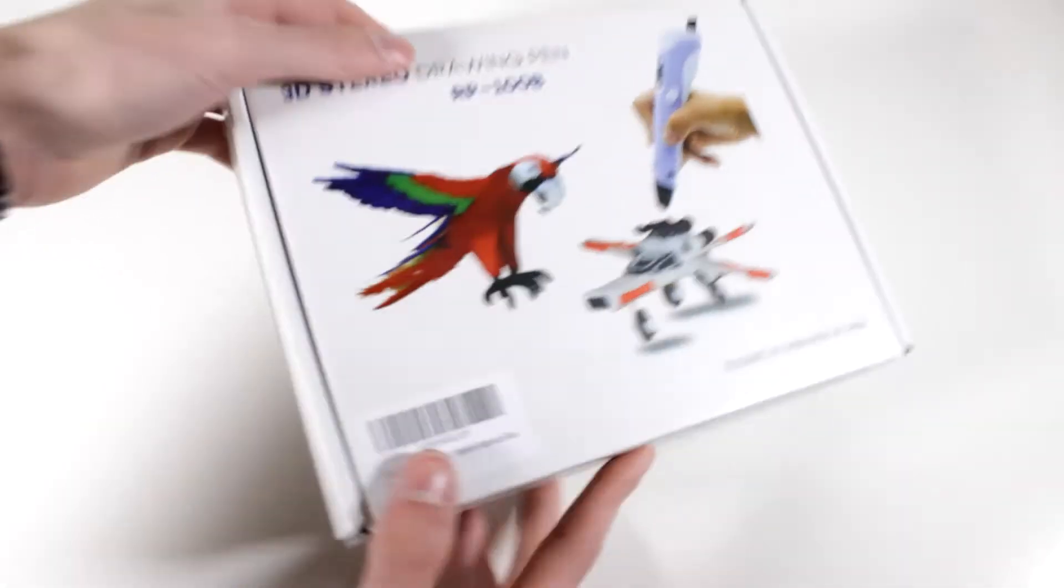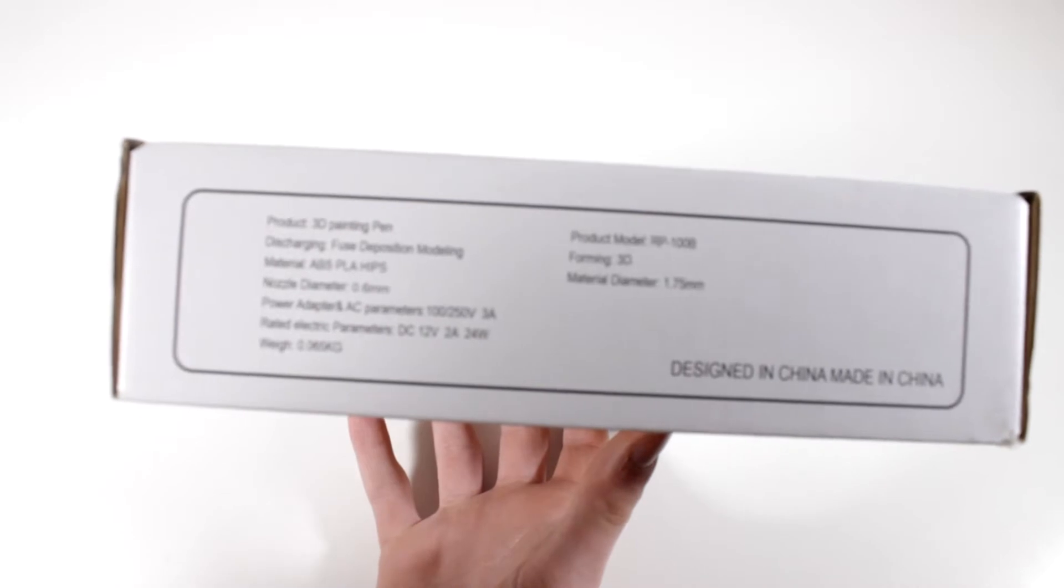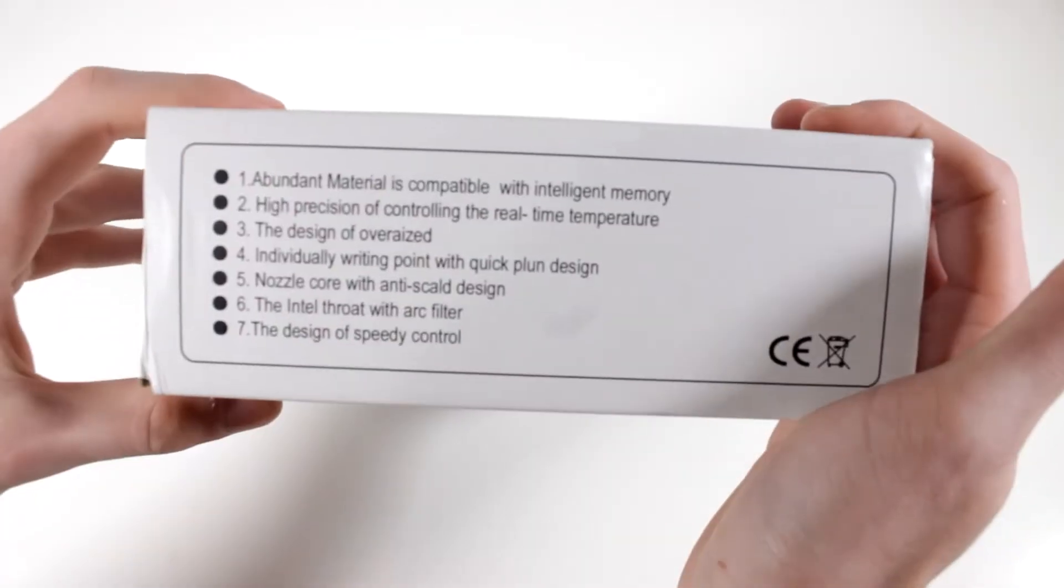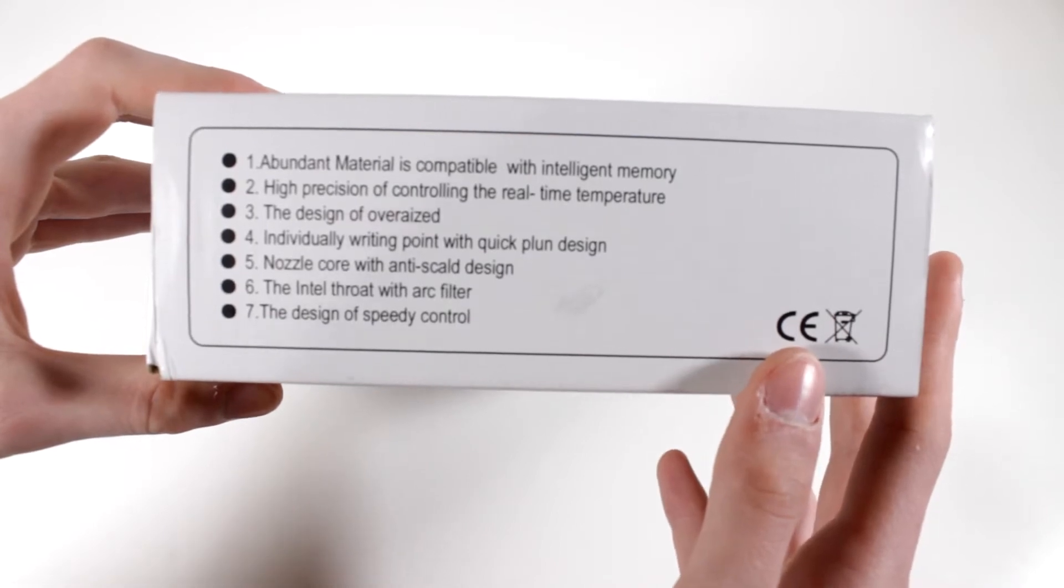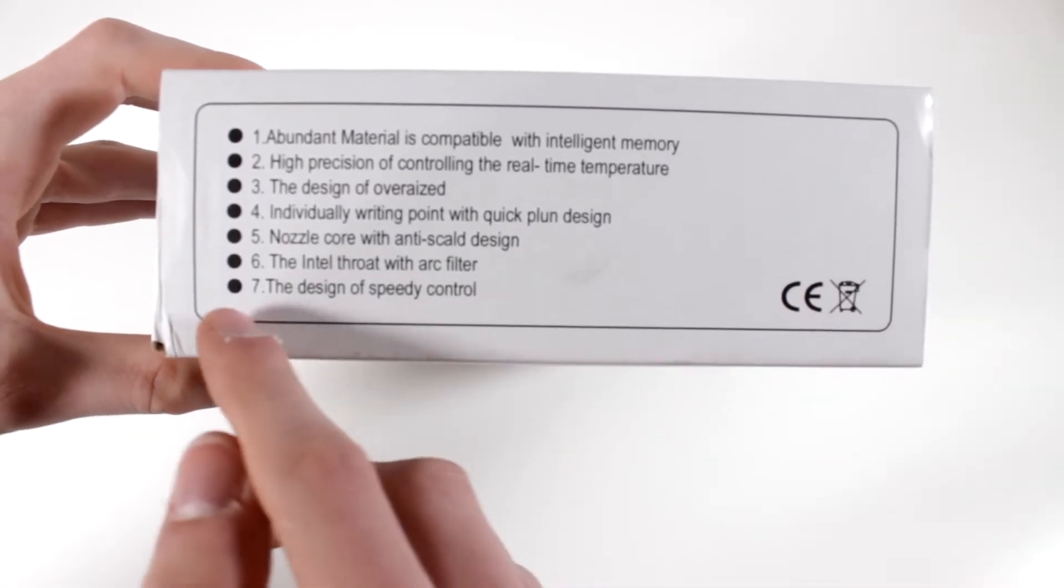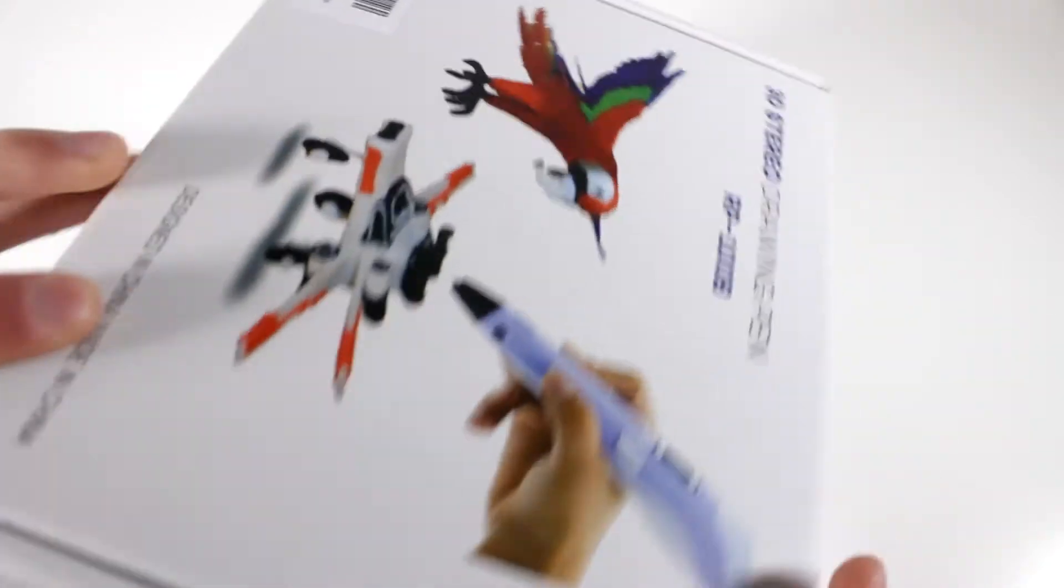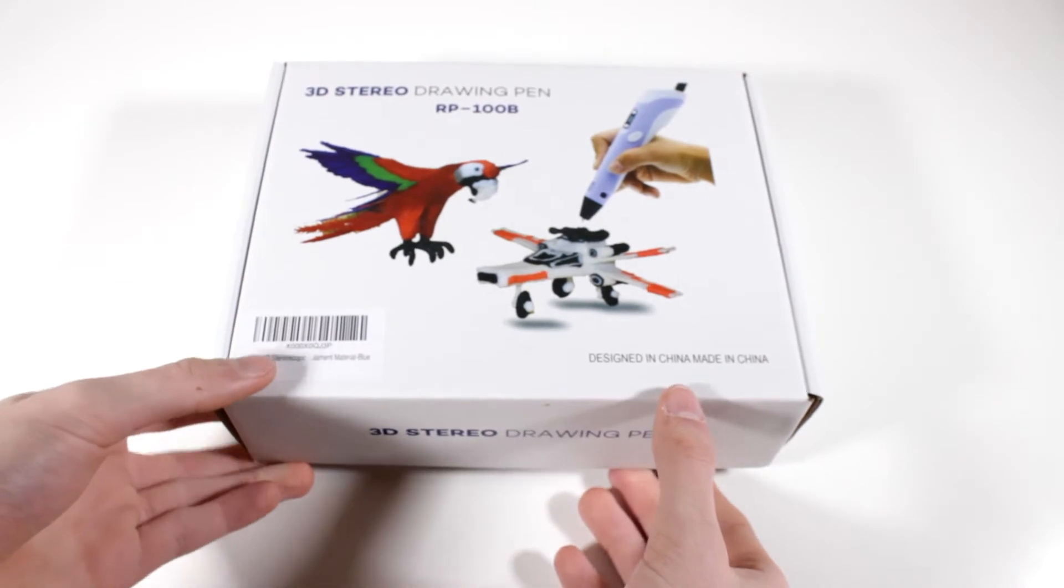This is just the box that it comes in. You can see some of the specifications on the back here if you're interested in reading these. On the side here it says some of the features: has abundant materials compatible with intelligent memory. This doesn't look like very good English. As you can see the design is speedy control - we're not going to read that because it is clearly just a very bad Chinese translation.